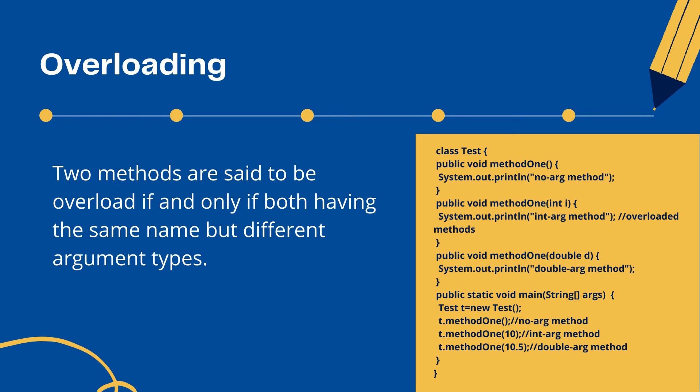For example, if I call the first method with no argument, it checks for a method with no argument and returns the result. If I pass 10, it checks the test class — if the first method doesn't match, it moves to the second; if the second doesn't match, it moves to the third. When it finds a match, it gives the result. That's how automatic promotion works in overloading.